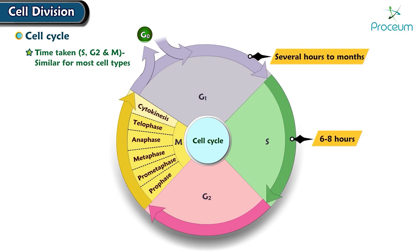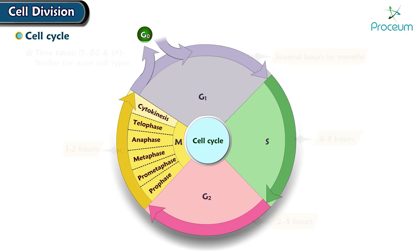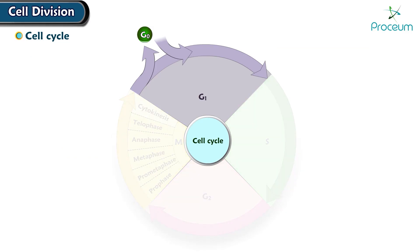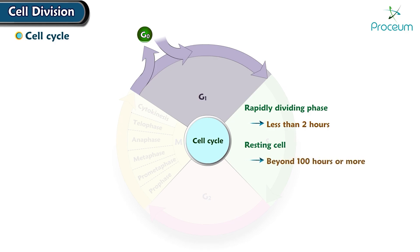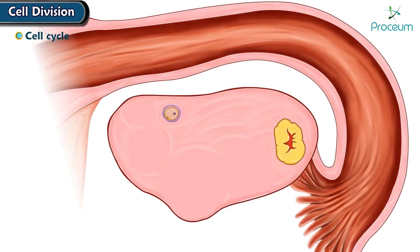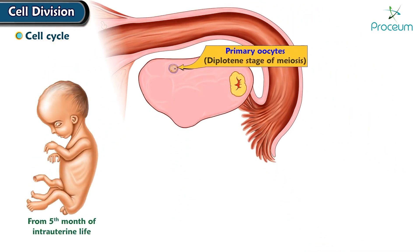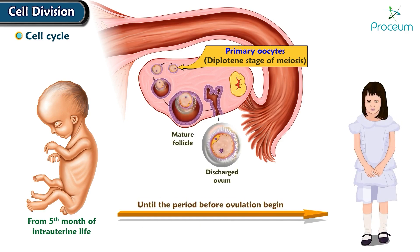S phase lasts for 6 to 8 hours, G2 phase lasts approximately 2 to 5 hours, and M phase lasts 1 to 2 hours. In contrast, the duration of G1 phase shows vast variation. In a rapidly dividing cell, G1 phase can be less than 2 hours; in a resting cell, it can be beyond 100 hours or more. In ovaries, primary oocytes remain in the diplotene stage of meiosis from the fifth month of intrauterine life until the period before ovulation begins.